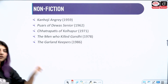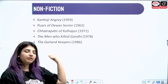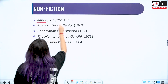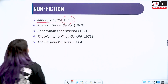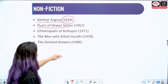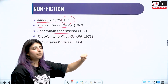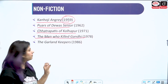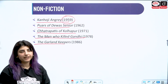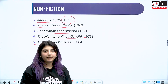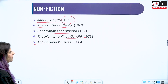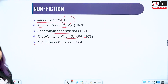Now moving to other pieces of non-fiction. All the previous works were fictional. The non-fictional works include: Kanhoji Angre (1959), Puars of Dewas Senior (1962), Chhatrapatis of Kolhapur, The Men Who Killed Gandhi — about the assassination of Mahatma Gandhi — and The Garland Keepers, which is about the Emergency in India. Make sure you note these down chronologically in your notebooks.